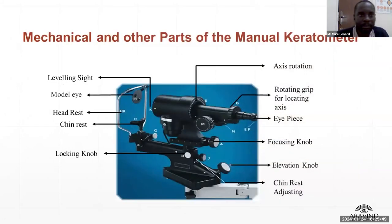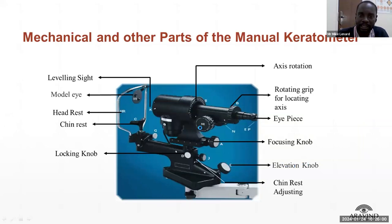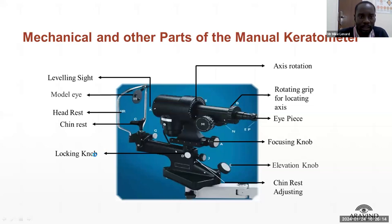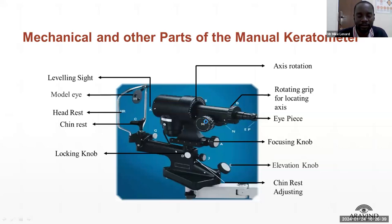For the mechanical parts of the manual keratometer: we have the elevating knob, used to lift the whole machine up or down. There is a focusing knob that moves the machine forward or backward to focus on the patient's eye. We also have a locking knob used when the machine is not in use, and rotating drums used to measure the curvature of the cornea in order to focus the mires inside.